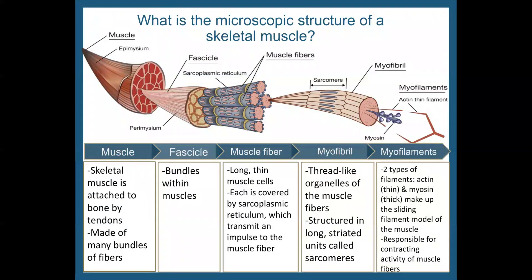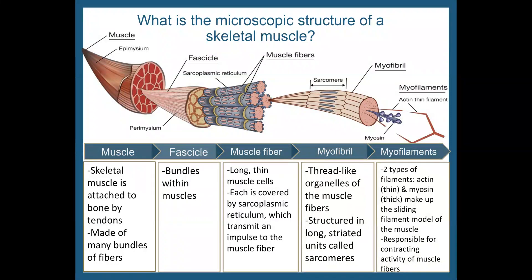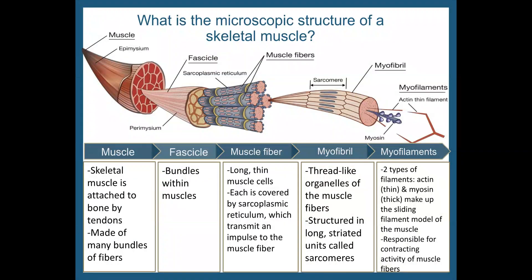Myofibrils are made up of myofilaments. Two types of filaments are actin, which are thin, and myosin, which are thick. They make up the sliding filament model of the muscle, which is responsible for the contracting activity of muscle fibers. That shows you the basic structure of skeletal muscles — they're made up of these components.